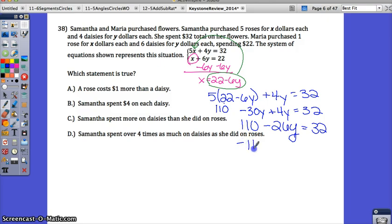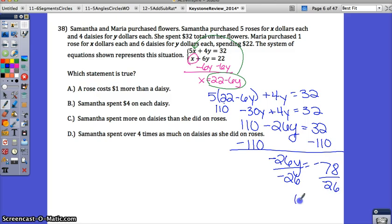Equals 32. Then to get Y by itself, I need to subtract 110 from both sides. And I have negative 26Y equals negative 78. Now I can divide by negative 26 to get Y by itself. Remember, this is just Y. So Y equals 3. And remember, go back to what Y is. 4 daisies for Y dollars each. So Y is 3 dollars per daisy.